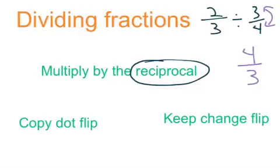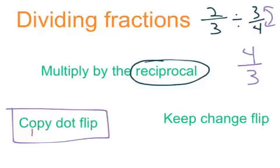One way to remember how to work with fractions, there's a couple phrases that we use. One is called copy dot flip. Copy dot flip simply means you're going to copy the first fraction, you're going to change it to multiplication, and then you're going to flip the second fraction. Some people call it keep, change, flip. Same thing. You're going to copy the original fraction, you're going to change it to multiplication, and then you're going to flip the fraction on the right and then do it as a multiplication problem.